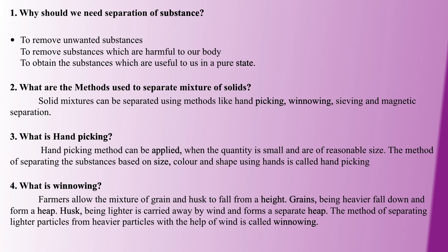Next question: Winnowing. Winnowing is used to separate grain and husk. The grain is heavier and the husk is lighter. The light impurities like husk are separated from the heavier grains. This is the method farmers use.